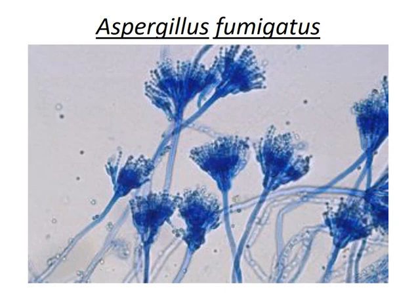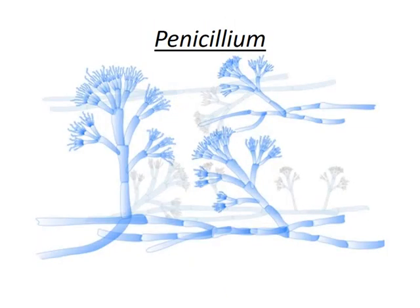As can be observed, the fungal structure is stained dark blue in color due to the cotton blue stain. What we can observe in the diagram are the long structures — that is, the fungal mycelium or hyphae — which give rise to conidiophores, and it is these conidiophores that bear the conidia.